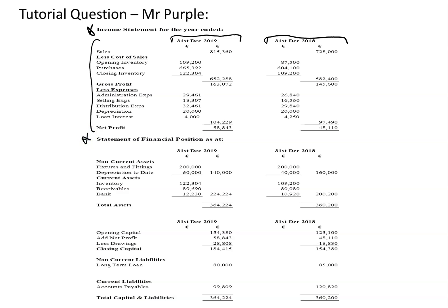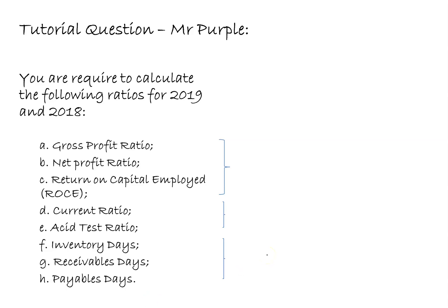Down here we have the statement of financial position: assets equals capital plus liabilities. Again we have the financial information for the year ended 31st December 2019 and to the right the financial information for the year ended 31st December 2018. The question asks us to calculate the following ratios for 2019 and 2018.